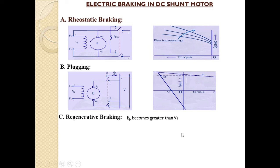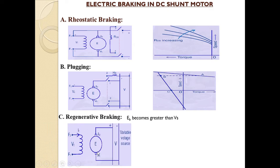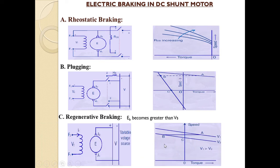In regenerative braking of the DC shunt motor, the back EMF becomes greater than the supply voltage, and the motor acts as a generator. Looking at the graph — torque on the x-axis and speed on the y-axis — the torque travels from positive polarity to negative polarity and then reaches zero. This covers the various braking methods involved in the DC shunt motor.